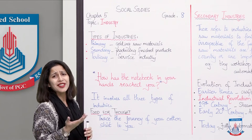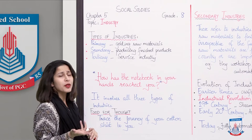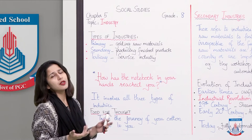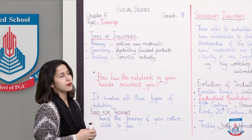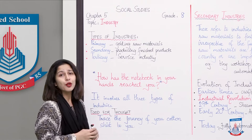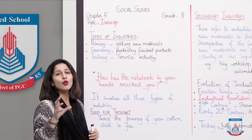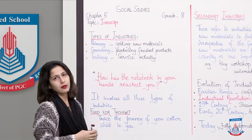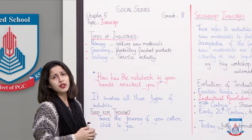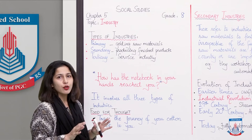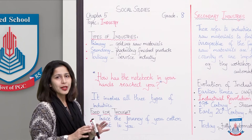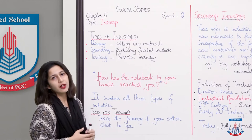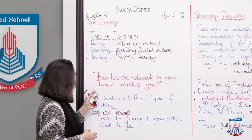Primary industry is about getting raw materials. We are an agricultural country, remember? So raw materials come from our earth's crust. Secondary industry is about producing finished goods — using raw materials, manufacturing them, making an end product. Tertiary is the service industry. It is not related to producing goods, but it provides services to us which make our life easier.